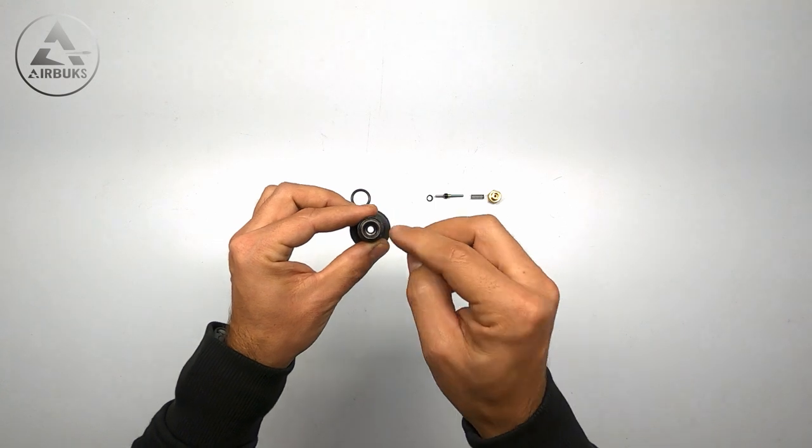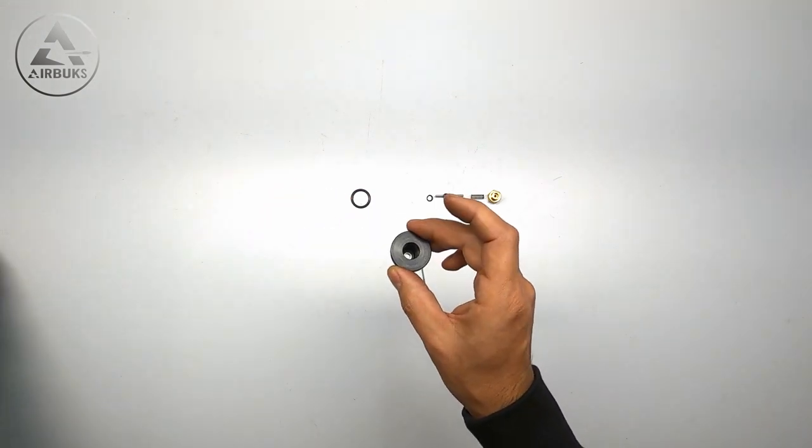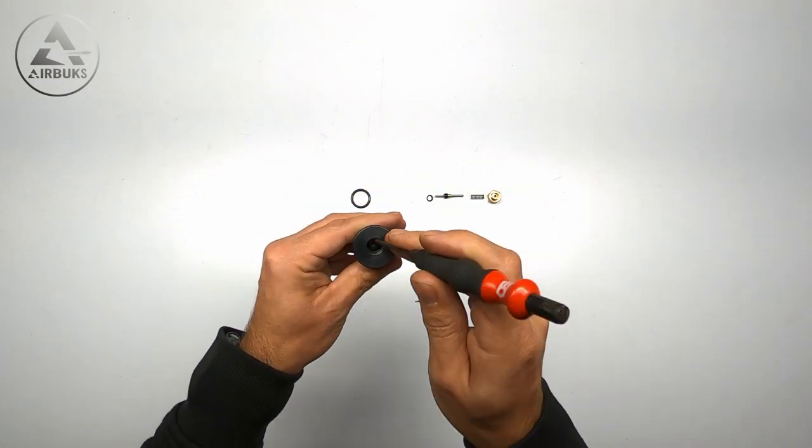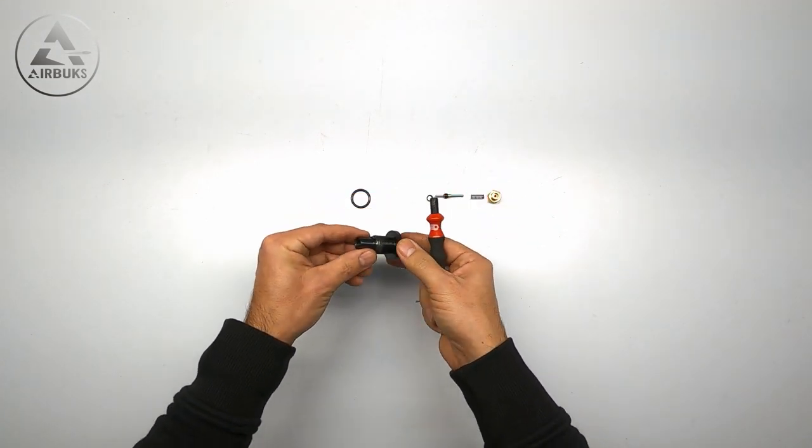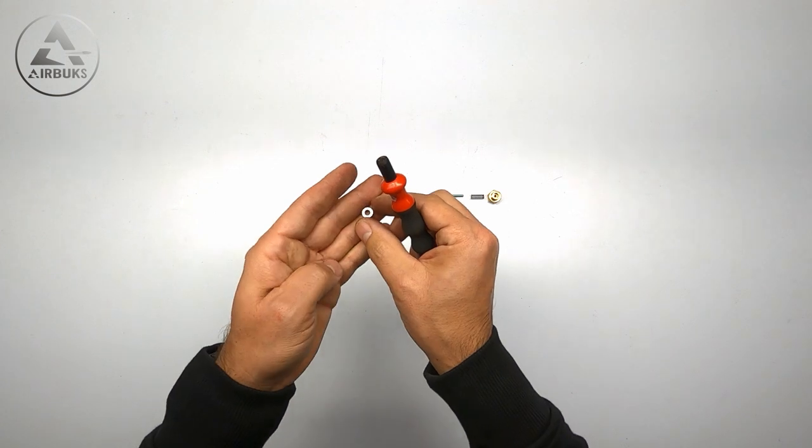And there down in the bottom you have the valve seat. Let's take the valve seat out quickly by carefully pushing it out like this. And this is the valve seat.